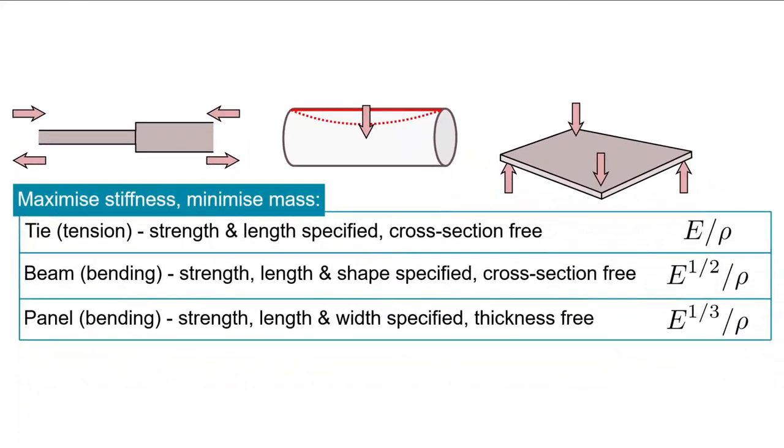The performance indices associated with maximizing stiffness while minimizing mass is given below for each of the types of components described above. These are applicable on the basis of their strengths already been decided, as well as some of their geometries being set.